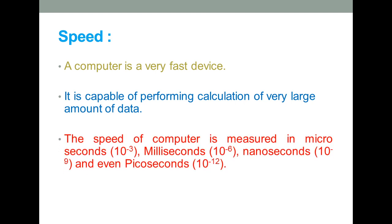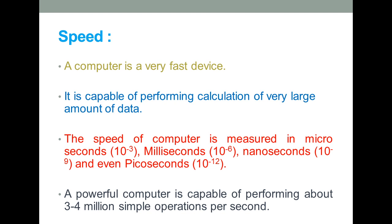The speed of a computer is measured in terms of microseconds, milliseconds, nanoseconds, and even picoseconds. A powerful computer is capable of performing about 3 to 4 million simple operations per second. It can perform calculations on a very large amount of data, taking fractions of seconds, and can perform millions of calculations within a few seconds compared to a human being.